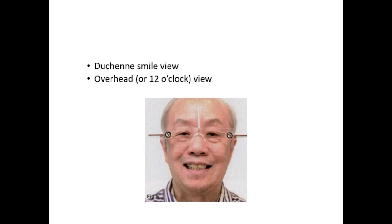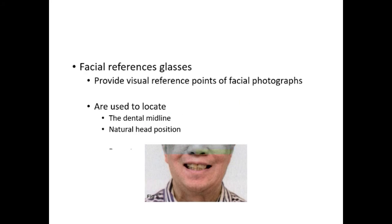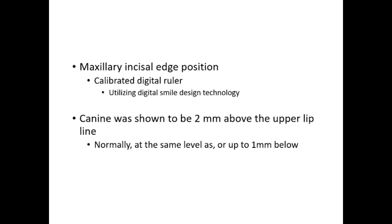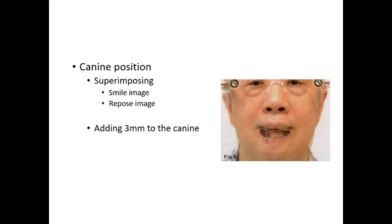Photograph of the patient wearing facial reference glasses with the U-chain smile view. Facial reference glasses are used to locate the dental midline and natural head position, which are recorded by the coexisted facial analyzer. The clinician used a calibrated digital ruler utilizing digital smile design technology to determine maxillary incisor edge position. In this case, the canine was shown to be 2 mm above the upper lip line, and by superimposing the smile image and the repose image, the desired canine position was determined.